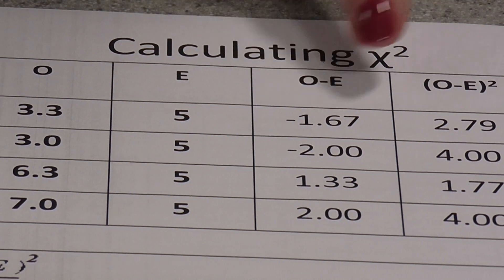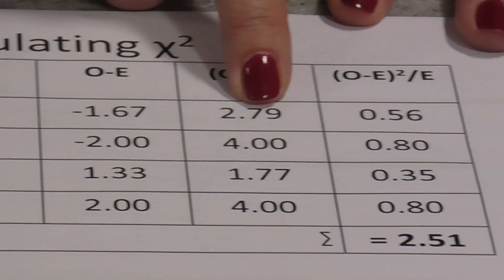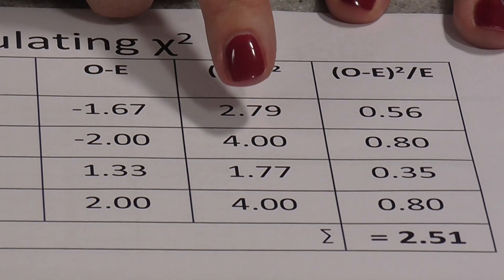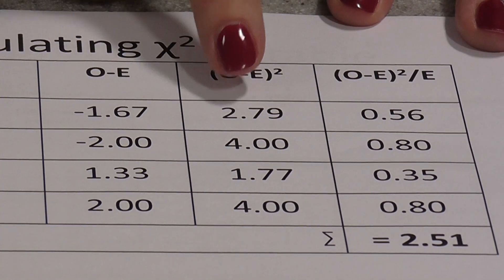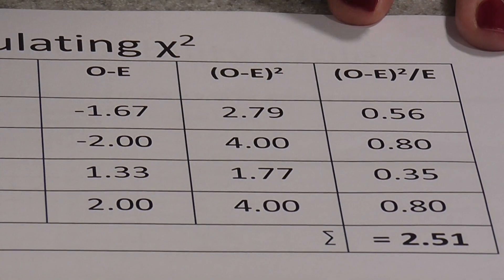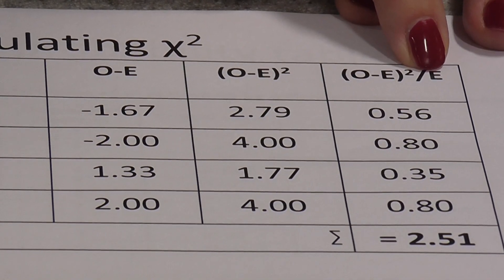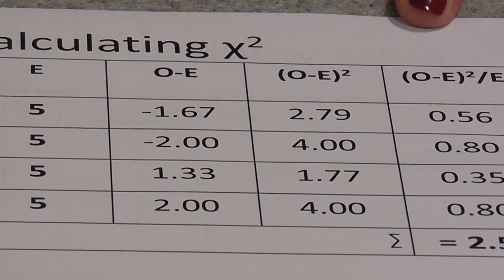The next thing we do, once we've worked out observed minus the expected, we square that result. That's simply to get rid of the negatives. But we do have to square every single one of them, negative or not. And the final step, once we've done that squaring, we do the results we've just calculated there divided by the original expected result, which in this case was five.